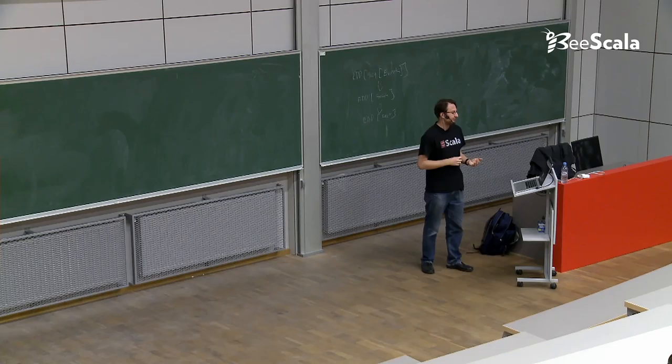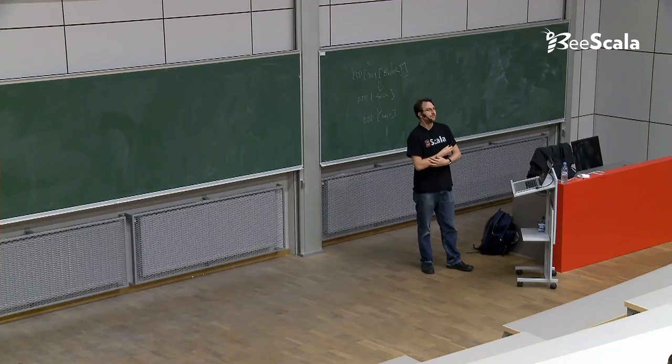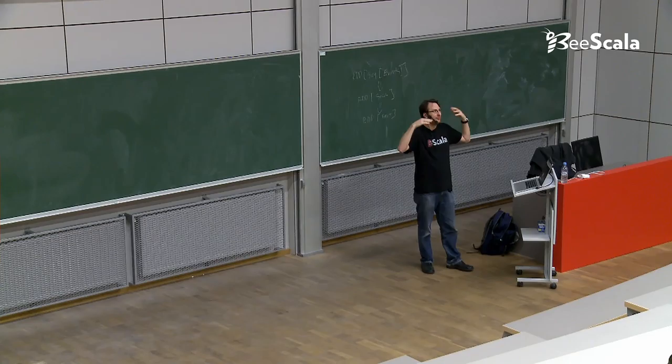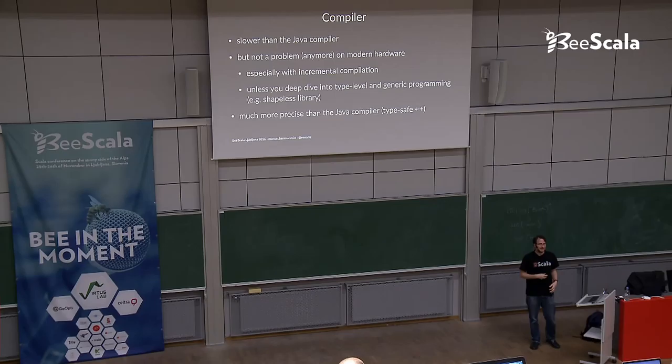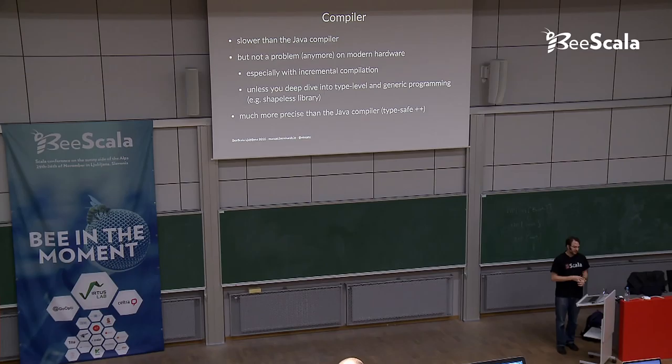Now, of course, if you're doing things like type level and generic programming, like using a library like Shapeless, which relies on the compiler doing a lot of compiler-y things to solve the problem, it's going to be slow as hell. But then you're really asking for it. So that's your choice. I'm not saying you cannot do it. I'm just saying it's your choice. Then it's going to be slow. But other than that, I think you can be really productive these days.